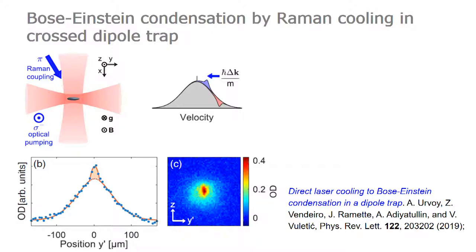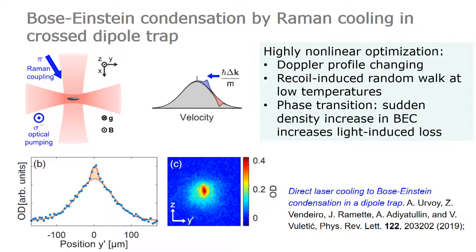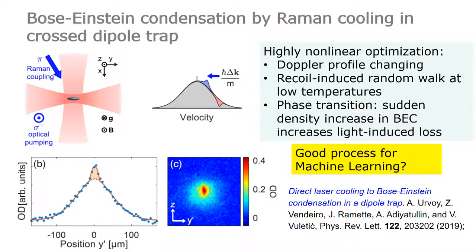However, this is a highly nonlinear system. The Doppler profile keeps changing as you cool, and when you get close to the recoil energy, you get recoil-induced random walks, which complicates things. You are also trying to cool across a phase transition, so you have a sudden density increase in the Bose-Einstein condensate which increases the light-induced loss. It was a very hard system to optimize experimentally, so we asked ourselves: is this a good process for machine learning?